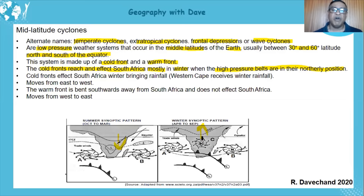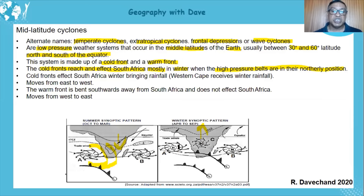When it's winter in the southern hemisphere, the ITCZ is in the northern hemisphere, and the high pressure systems move toward this low pressure system — they'll be in a northerly position. This explains it: if the high pressure systems are in their southerly position, especially the South Atlantic High, it will ridge and block the cold front from coming in. But if it's in its northerly position, it allows the cold front to come in and affect the country.